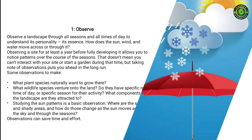Some observations to make: what plant species naturally want to grow there? What wildlife species venture onto the land — do they have a specific route, time of day, or specific season for their activity? What components of the landscape are they attracted to? Studying sun patterns is a basic observation: where are the sunny and shady areas, and how do those change as the sun moves across the sky and through the seasons? Observations can save time and effort.